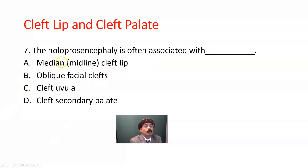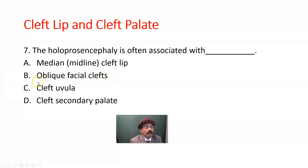Question seven: Holoprosencephaly is often associated with what? In holoprosencephaly we have one ventricle in lieu of two lateral ventricles of the brain, with cognitive defects and abnormality in the frontal lobe. Options: A) Median midline cleft lip, B) Oblique facial cleft, C) Cleft fibula, D) Cleft secondary palate. The answer is A, median midline cleft lip.